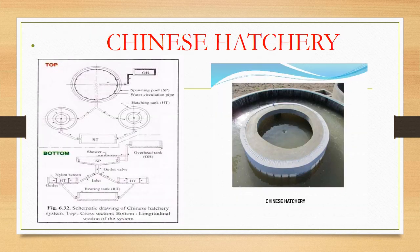Chinese hatchery has five chambers: overhead tank, spawning pool, egg collection chamber, incubation and hatching chamber, and spawn collecting chamber.